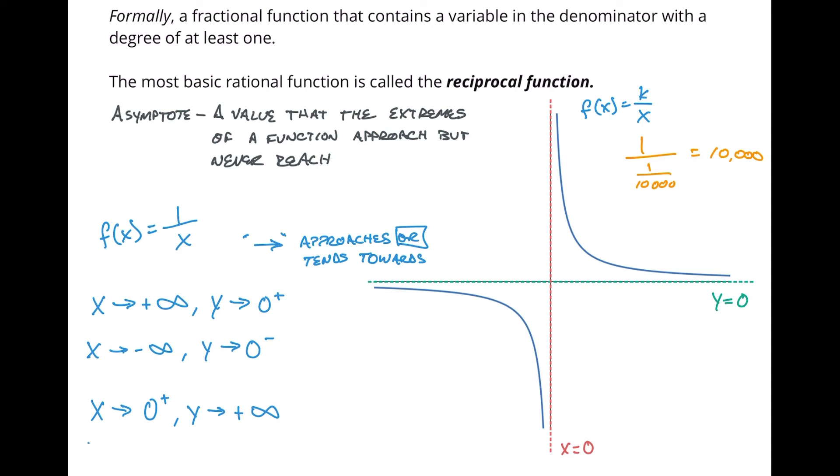And similarly, as x approaches 0 from the negative side, as x is approaching 0 from the negative side, y is approaching negative infinity. This here, this is our vertical asymptote. And this up here, this is our horizontal asymptote. Our horizontal asymptote, our vertical asymptote. So that's pretty straightforward, huh? Cool.